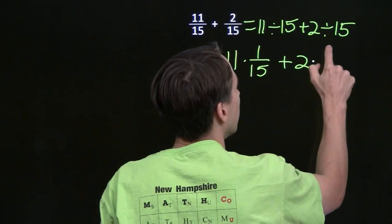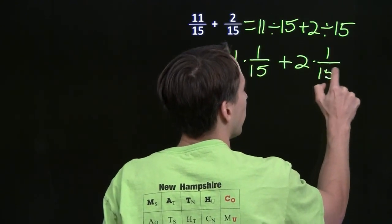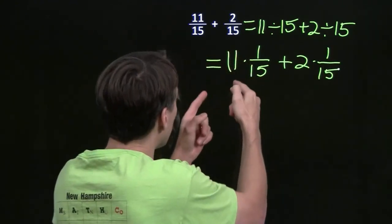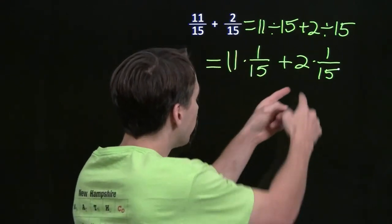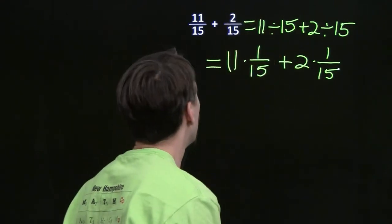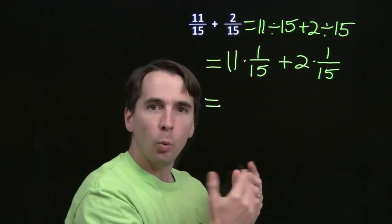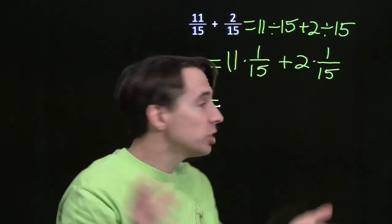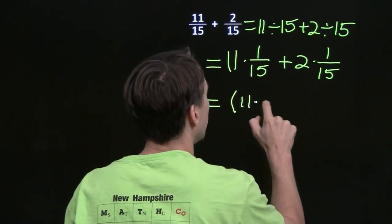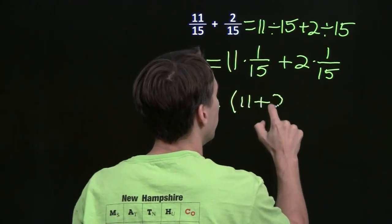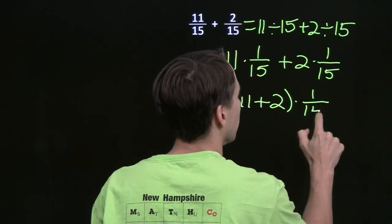Same thing over here. We could have just seen this from fraction multiplication: 11 times 1/15 is 11/15, and 2 times 1/15 is 2/15. Now we can factor out the 1/15 — we're just using the distributive property. This will be (11 plus 2) times 1 over 15.